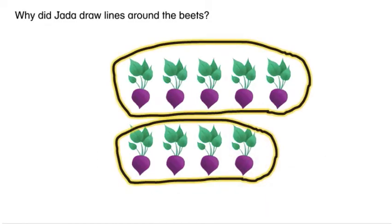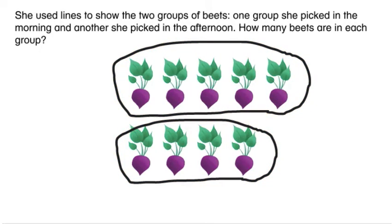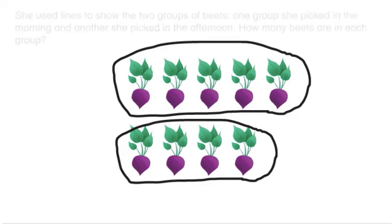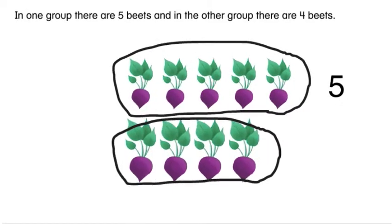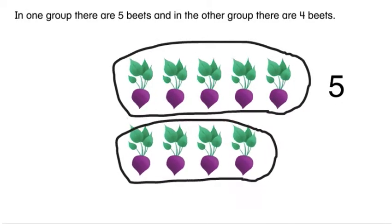Why did Jada draw lines around the beets? She used lines to show the two groups of beets — one group she picked in the morning and another she picked in the afternoon. How many beets are in each group? In one group there are five beets and in the other group there are four beets.